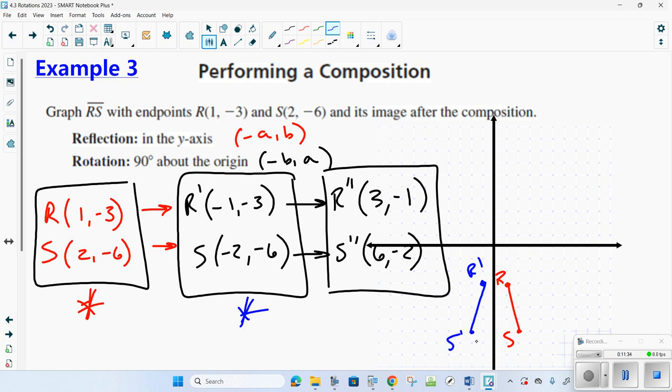Now a rotation 90 degrees. We're spinning this thing 90 degrees. I'll do this one in green. Positive 3, negative 1, there's R double prime. And positive 6, negative 2, this is S double prime. Notice you're spinning this way 90 degrees.